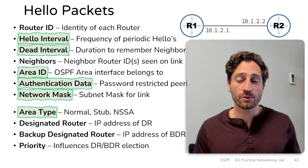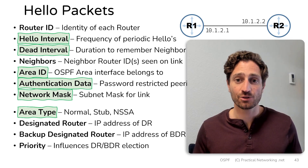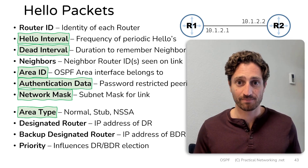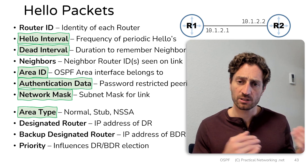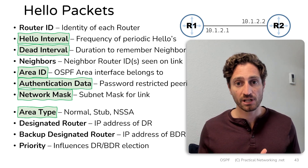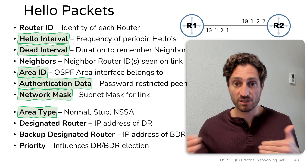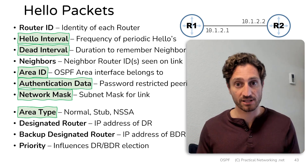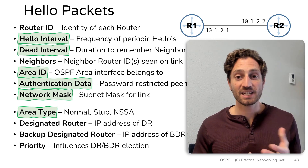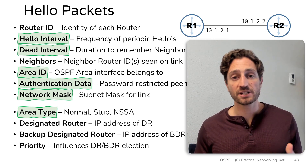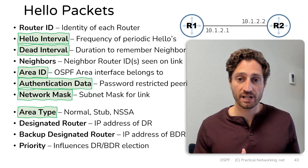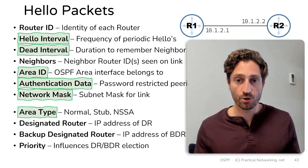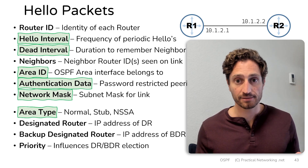So that wraps up everything we wanted to communicate in this lesson. The main takeaway is understanding everything inside a hello packet, how it's used, and which pieces must match for two routers to form a neighbor adjacency. In the next lesson, we're going to take a look at the actual adjacency process — showing you all the packets and all the neighbor states that two routers will go through in order to become fully adjacent.